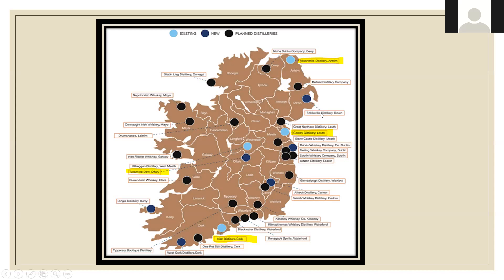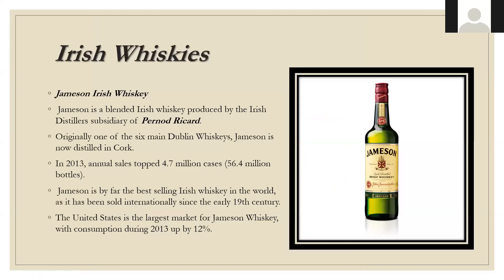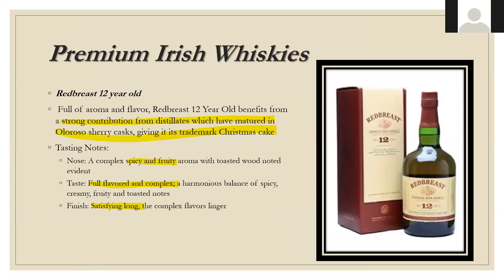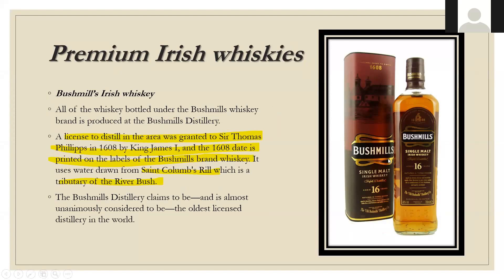Jameson, owned by Pernod Ricard, is a huge part of the category — in 2013, annual sales topped 4.7 million cases, that's 56 million bottles. By far the best-selling Irish whiskey in the world, with the United States as the largest market, consumption up 12% in 2013. For the premium side, Redbreast is made at that same Midleton distillery. Bushmills' 16-year single malt is notable — a distilling license was granted to Sir Thomas Phillips in 1608 by King James I, and that date is printed on Bushmills labels. It uses water from St. Columb's Rill, a tributary of the River Bush, which gives it its name.